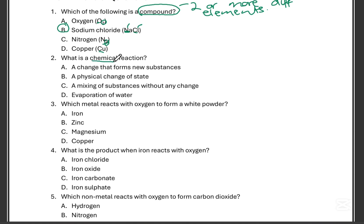Two, what is a chemical reaction? Is it a change that forms new substances? Is it a physical change of state? Is it a mixing of substances without any change? Or is it evaporation of water? The answer for question two is A. This is a change that forms new substances. So in a chemical reaction, that's when we will have reactants and products. Reactants is basically the elements that react together in order for us to form a new substance.